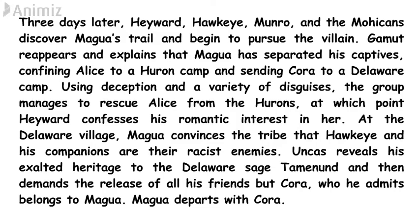Three days later, Hayward, Hawkeye, Munro, and the Mohicans discover Magwa's trail and begin pursuing him. Gamut escapes captivity and informs the group that Magwa has kept Alice in the Huron camp and Cora in a separate Delaware camp, intending to marry Cora as vengeance against Munro. Using deception and disguises, the group rescues Alice from the Hurons, at which point Hayward confesses his romantic feelings for her. At the Delaware village, Magwa convinces the tribe that Hawkeye and his companions are their enemies.